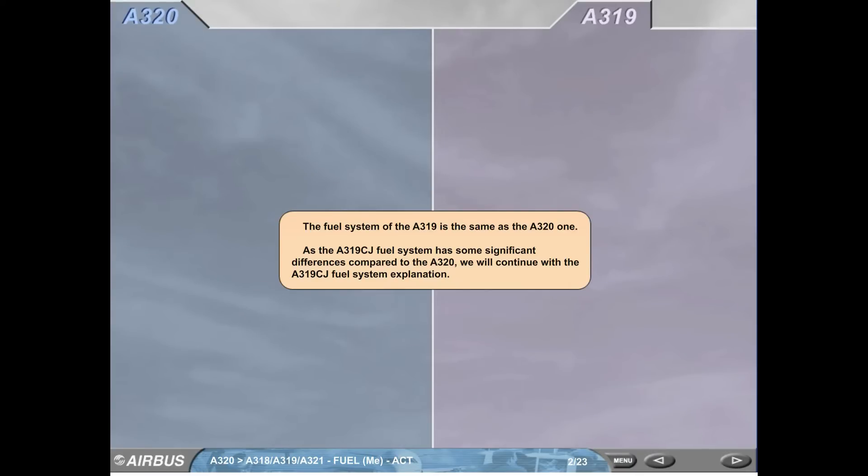The fuel system of the A319 is the same as the A321. As the A319CJ fuel system has some significant differences compared to the A320, we will continue with the A319CJ fuel system explanation.